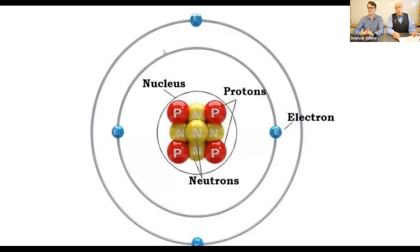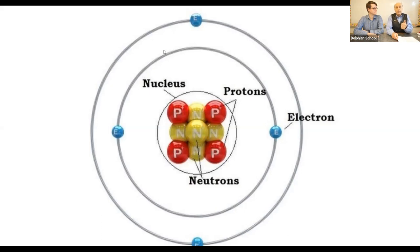Atoms are very, very tiny pieces of matter, and there are about a hundred different kinds of atoms. You might have heard of some: oxygen, iron, copper, aluminum. There are lots of them, and they all have a different number of protons and electrons. That's what makes them different.